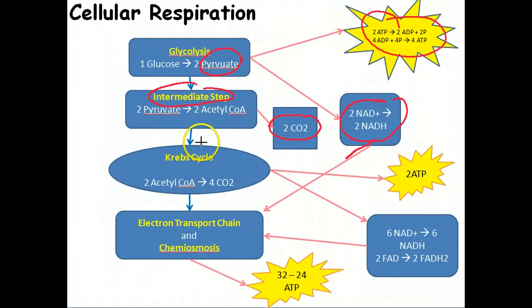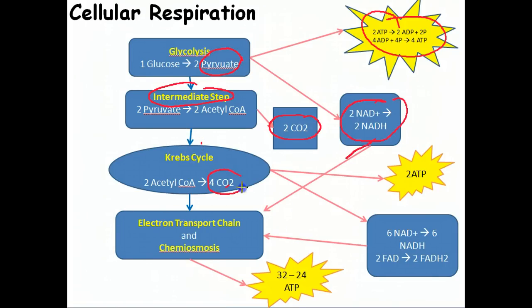That acetyl-CoA enters what we call the Krebs cycle, and for every two acetyl-CoAs, it gives off four molecules of carbon dioxide. At the end of the Krebs cycle, we say that glucose has been completely oxidized because it's lost all the electrons that it's going to lose.